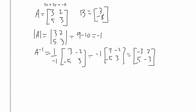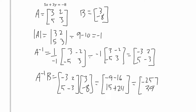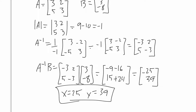For the final step, we multiply A inverse times B: [-3, 2, 5, -3] times [3, -8]. That gives negative 9 minus 16 equals negative 25, and 15 plus 24 equals 39. So x equals negative 25 and y equals 39. You can verify this using regular algebra. It's very clean that matrices let us solve this without doing any algebra.